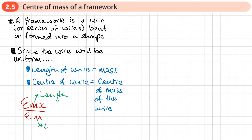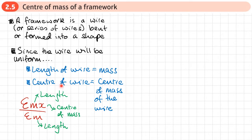The center of the wire is going to represent the center of mass of each piece of wire. Just like composite laminas, we calculate each piece of wire separately — we want the length and the center of mass, or center of wire, of each piece, and then we find the sum of those.